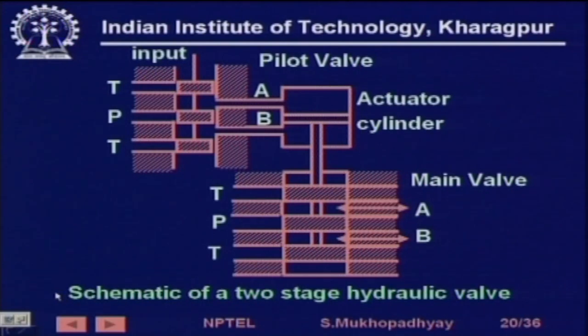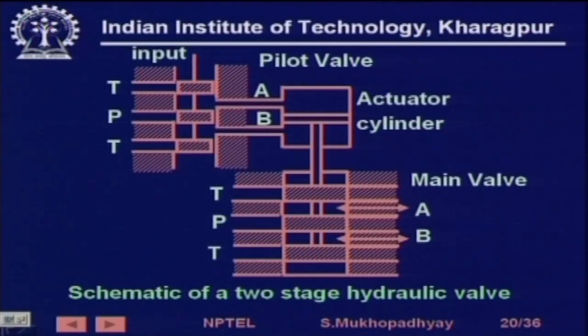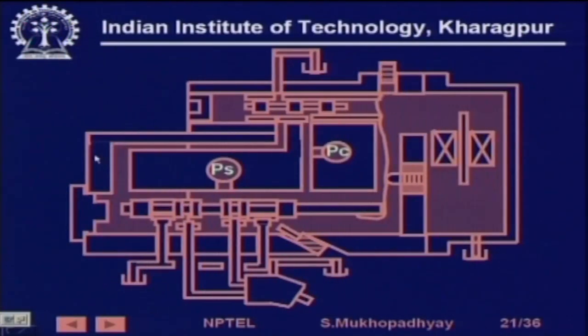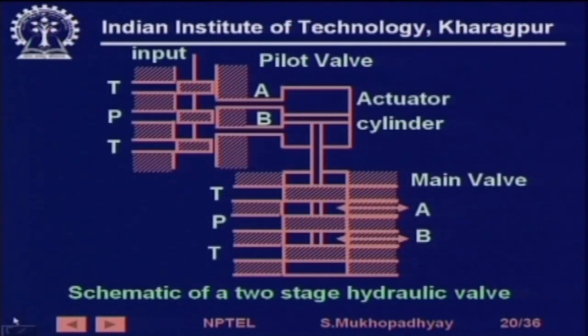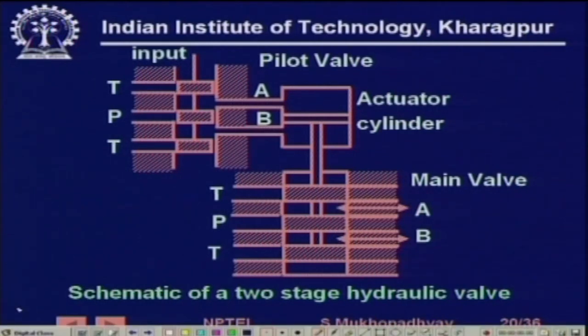There are various types of servo valves. For example, one may have a two-stage valve. What happens in a two-stage valve is that because you want to control huge power, the final stage valve is actually very large — so even to move its spool you need another servo valve. You need an actuator; this is the first stage.